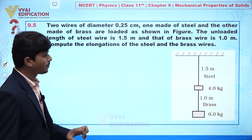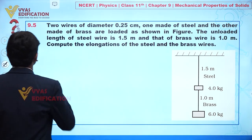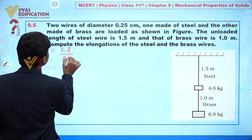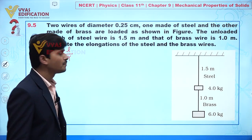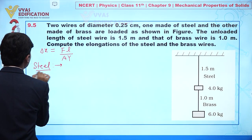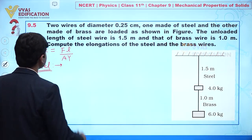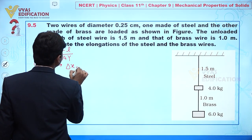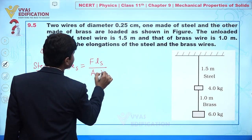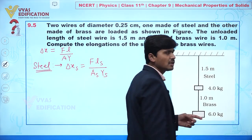Now concentrate on the screen. When talking about elongation, the formula is given by FL over AY. So if I am talking about the steel wire, the elongation in the steel wire is given by F times L_s divided by A_s times Y_s.